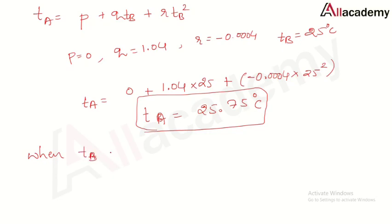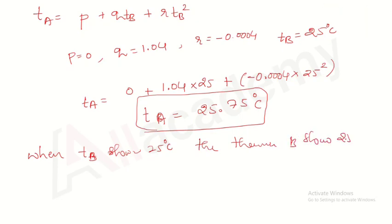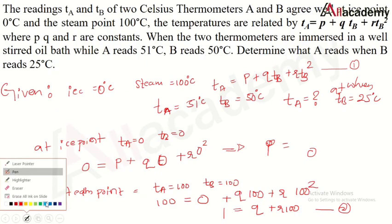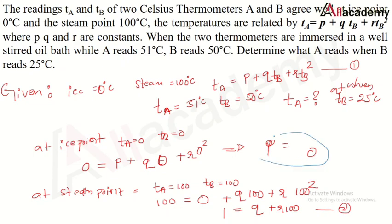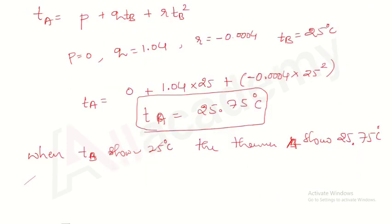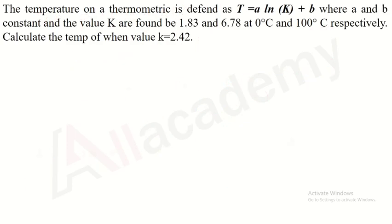When thermometer B shows 25°C, thermometer A reads 25.75°C. In the examination, marks will be distributed as follows: two marks for identifying p, two marks for identifying r, two marks for identifying q, and two marks for identifying the final temperature.